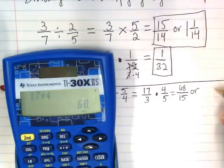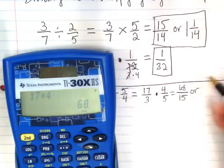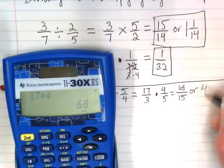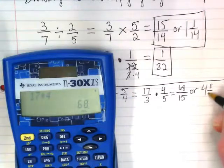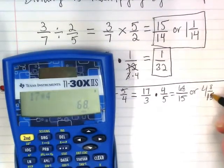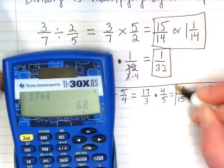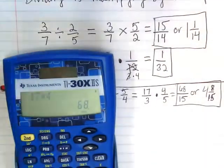We end up with 68 over 15, and we can leave it that way. Or I know there's 4 15s in 60, so it's going to be 4 and 8 fifteenths. Thank you. Because I was about to reduce that, and I can't reduce 8 15s. Perfect.